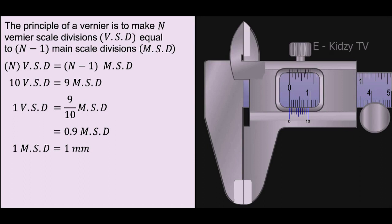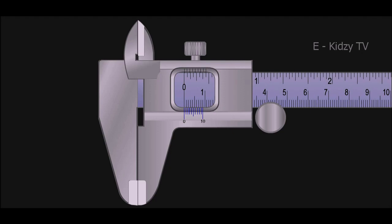Therefore, 1 Vernier scale division equals 0.9 millimeters. Note that the value of Vernier scale is less than that of main scale. The difference between the value of main scale division and Vernier scale division represents the smallest length that can be measured.